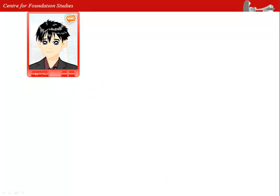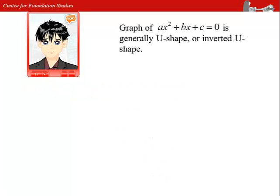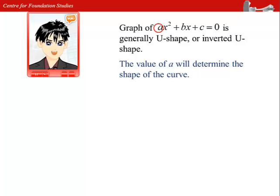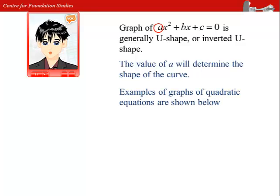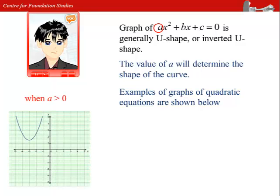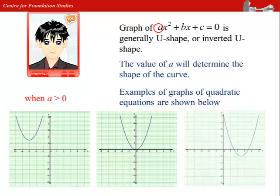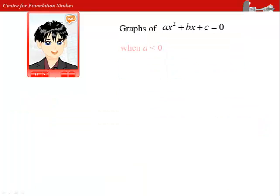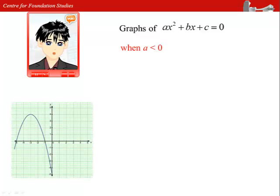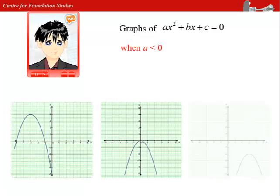The graph of a quadratic equation is generally a u-shaped curve, or an inverted u-shaped curve. The value of a determines the shape of the curve. Here are some examples of a quadratic equation when the value of a is greater than 0. When the value of a is negative, the graphs of the quadratic equation look like an inverted u-shaped curve.